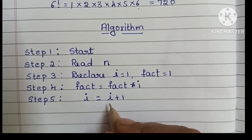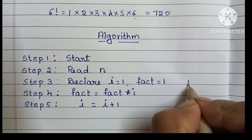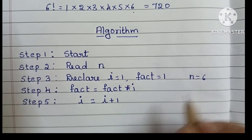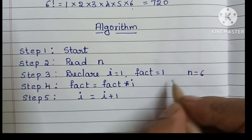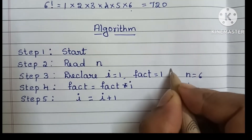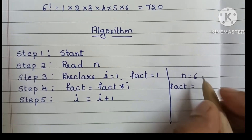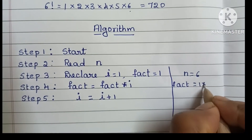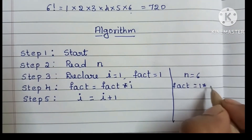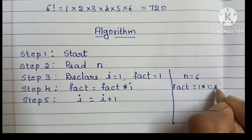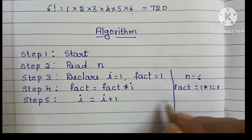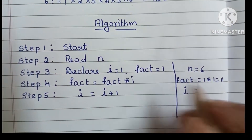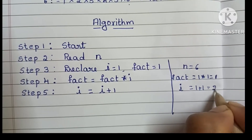Consider n is equal to 6 — we want to find the factorial of 6. In step 4 we calculate fact: fact is equal to fact into i. The value of fact is 1 and the value of i is also 1, so fact equals 1 into 1, which is 1. In step 5, i value is 1 plus 1, so i becomes 2.